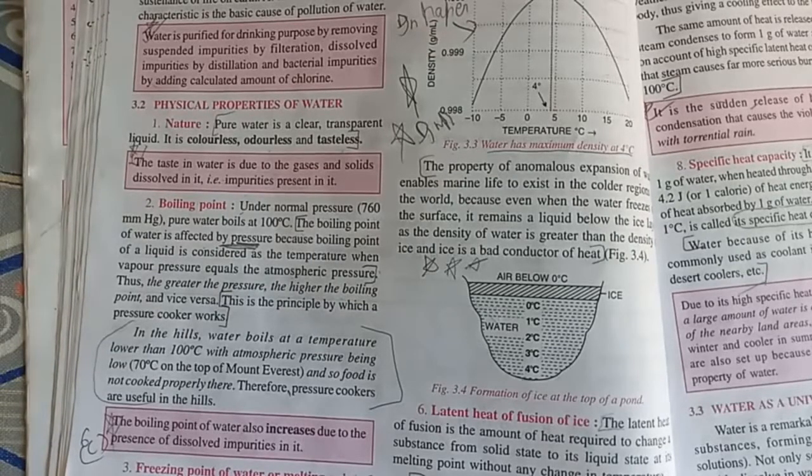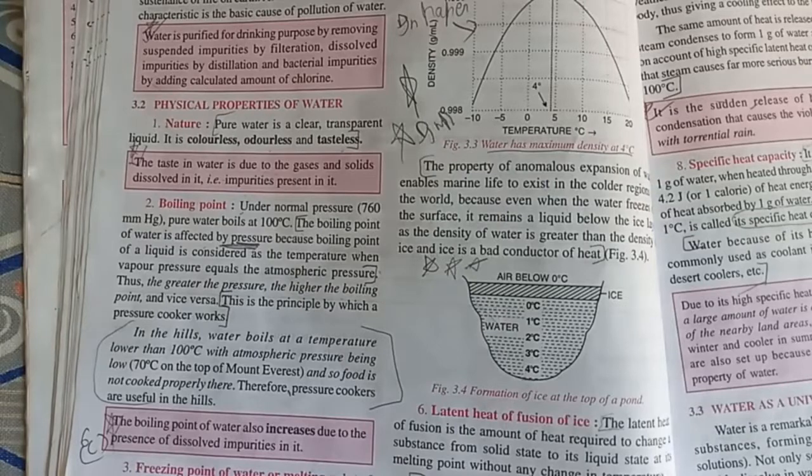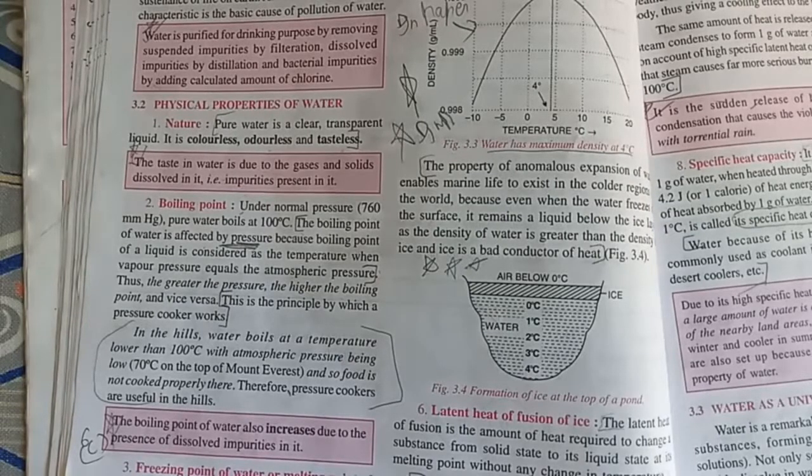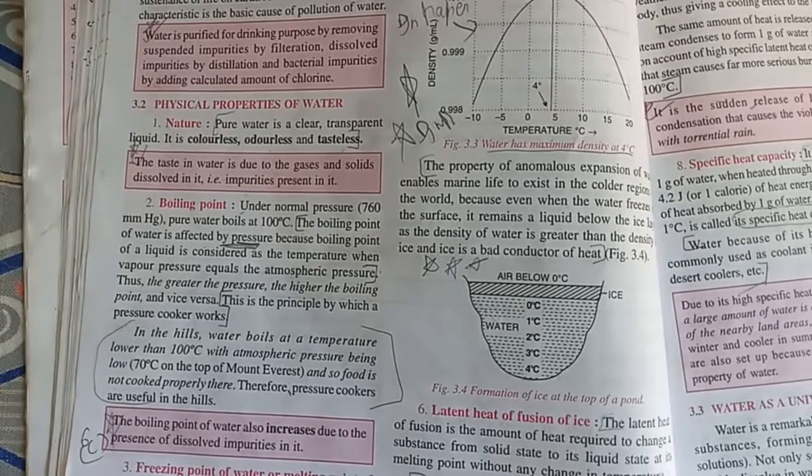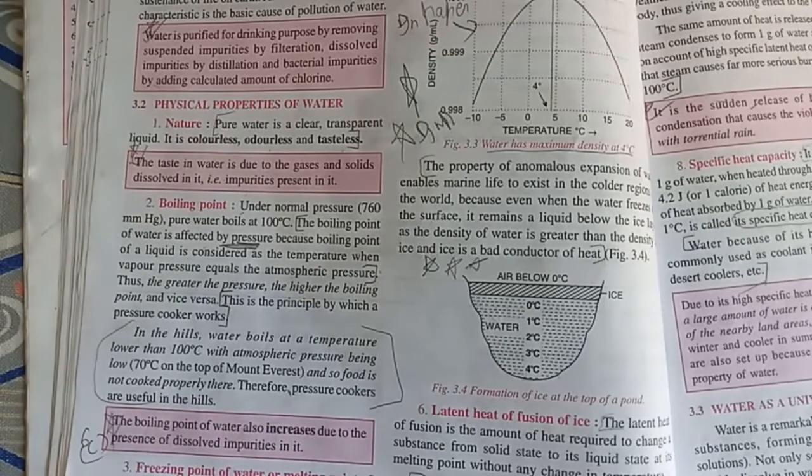Usually the boiling point of water is 100 degrees Celsius. Being lower atmospheric pressure at hills, especially on the top of Mount Everest, water boils below 100 degrees, that is at 70 degrees Celsius. Cooking of food is very difficult there.